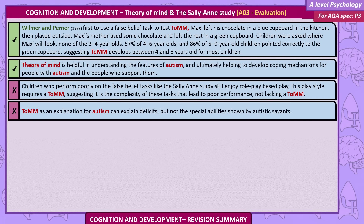Evaluations. Wimmer and Perner (1983) were the first to use a false belief task to test the theory of mind mechanism. Maxi left his chocolate in a blue cupboard and then played outside; his mother used some chocolate and left the rest in a green cupboard. Children were asked where Maxi will look. None of the 3–4 year olds, 57% of the 4–6 year olds, and 86% of the 6–9 year old children pointed correctly to the blue cupboard, suggesting theory of mind develops between 4 and 6 years old for most children. Theory of mind is helpful in understanding autism and developing coping mechanisms. However, children who perform poorly on false belief tasks still enjoy role-play based play, which itself requires a theory of mind mechanism, suggesting it's the complexity of these tasks that leads to poor performance. Theory of mind as an explanation for autism can explain deficits but not the special abilities shown by autistic savants.